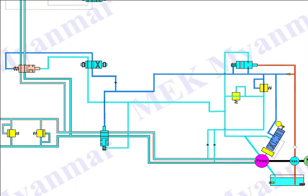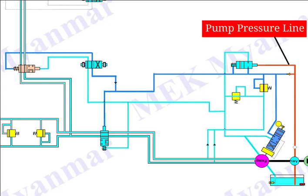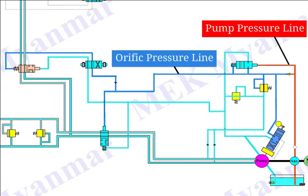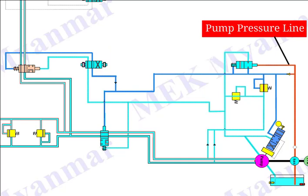At this condition, the hydraulic system is ready to operate. You can see that three different pressures in pilot oil line: pump pressure line (red), orifice pressure line (blue), and return line (light green). Pump pressure is the highest.